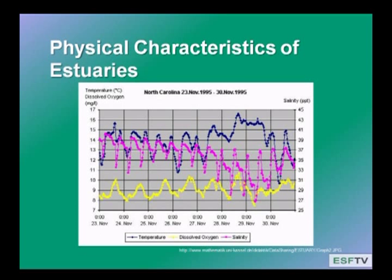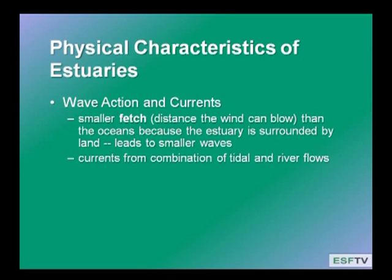Temperature changes are going to drive oxygen patterns as well. Waves are very important — because of the long fetch over the ocean, you have much larger waves there. That's often why estuaries are considered a safe harbor: a barrier prevents the wind from blowing directly from the open sea into the estuary, making a smaller fetch with smaller choppy waves. However, the soft sediment can get really moved around by those waves, even though they're less dramatic than in the open ocean. You also get currents due to river flow and the tidal pattern, causing constant shifting of material.